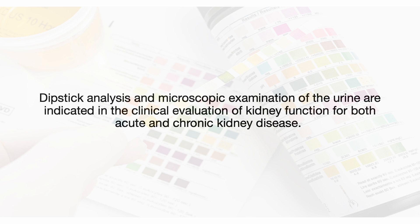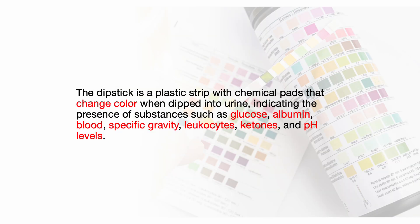Dipstick analysis and microscopic examination of the urine are indicated in the clinical evaluation of kidney function for both acute and chronic kidney disease. The dipstick is a plastic strip with chemical pads that change color when dipped into urine, indicating the presence of substances such as glucose, albumin, blood, specific gravity, leukocytes, ketones, and pH levels.